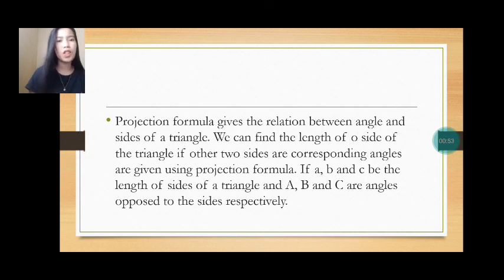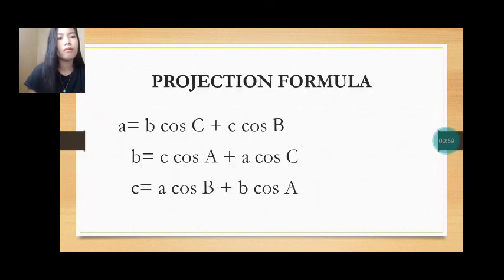Let's proceed to the projection formula. Projection formula, we have three types. First, a is equal to b cos C plus c cos B. Second, b is equal to c cos A plus a cos C. Third, c is equal to a cos B plus b cos A.